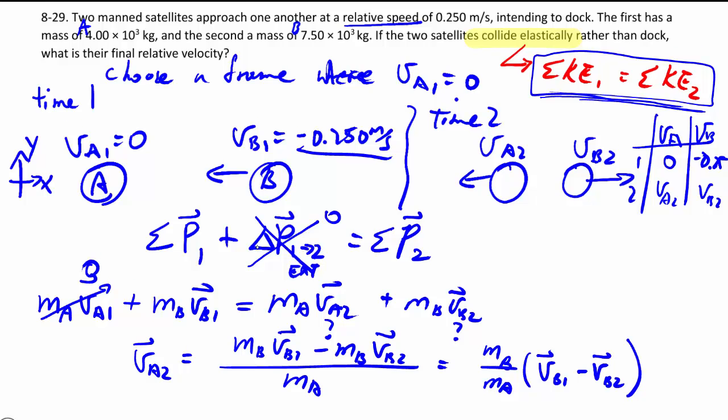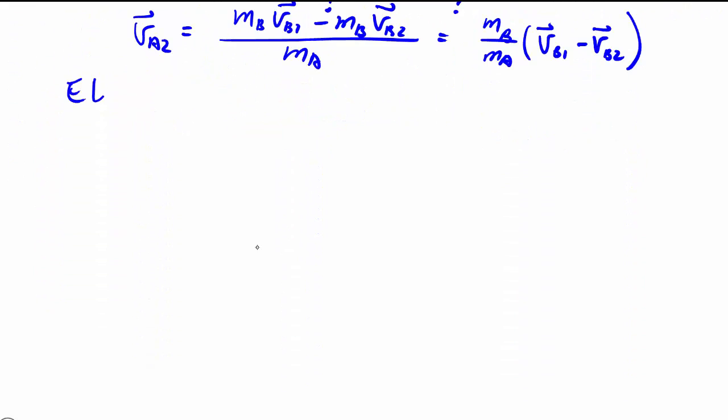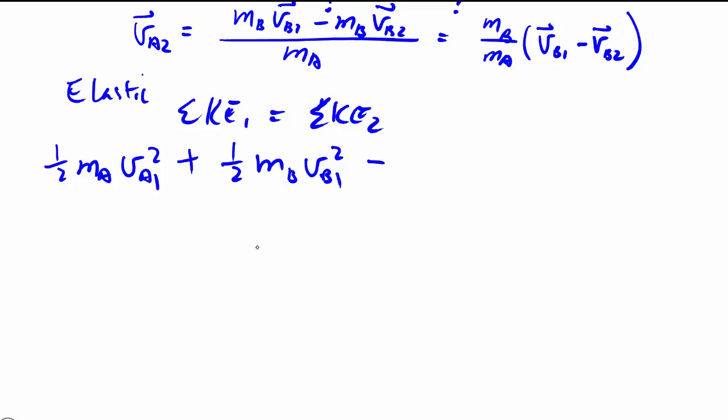Then we employ the fact that it is an elastic collision. So sum of KE1 is equal to sum of KE2 where we can say satellite A has a certain amount of kinetic energy in the beginning and satellite B likewise and then in the end. Notice again that for energy it's a scalar, it's squared, it doesn't matter what direction we're moving in.